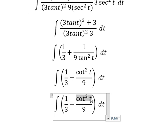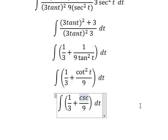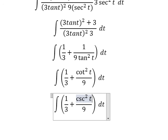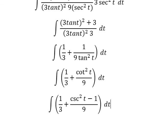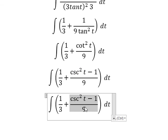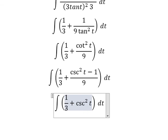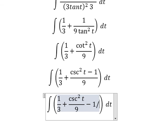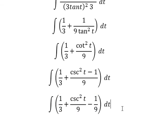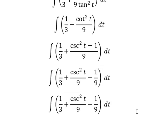One over 9 tan squared t we change to cosine t squared over 9, and this one we change for cosine t squared minus 1. So we separate this one: 1 over 3 minus 1 over 9 t, and now we get about 2 over 9.